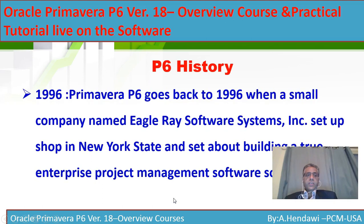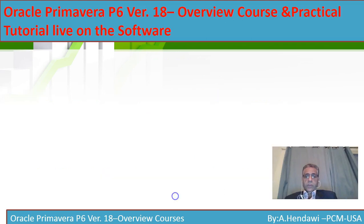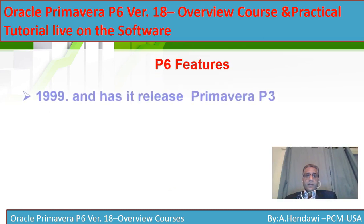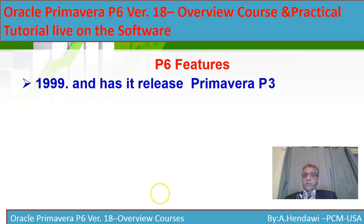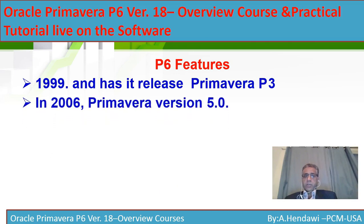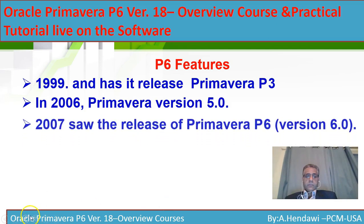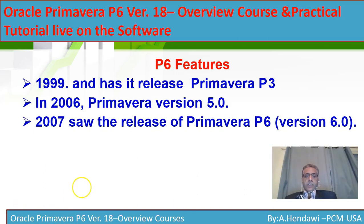P6 history: P6 goes back to 1996 when a small company called Eagle Ray Software Systems started a shop in New York State in America — this is the start of the program. In 1999 it released Primavera version P3, which is a very nice version of Primavera and some people still like it. In 2006 came Primavera version five, and in 2007 came Primavera P6.